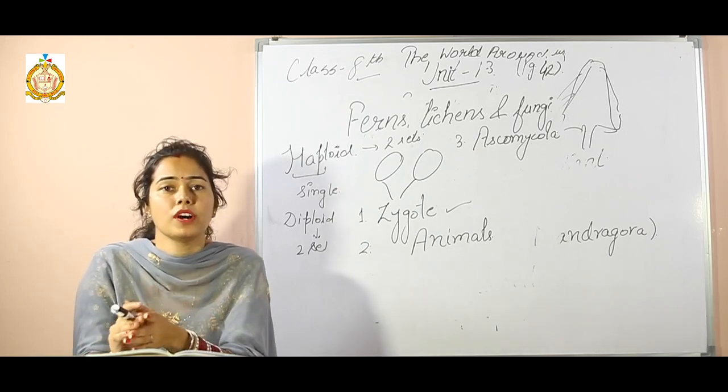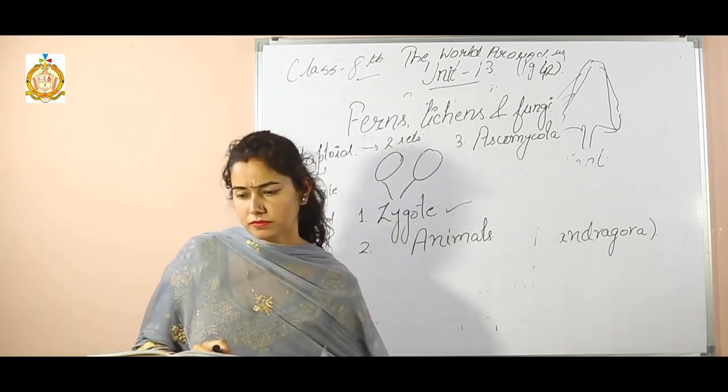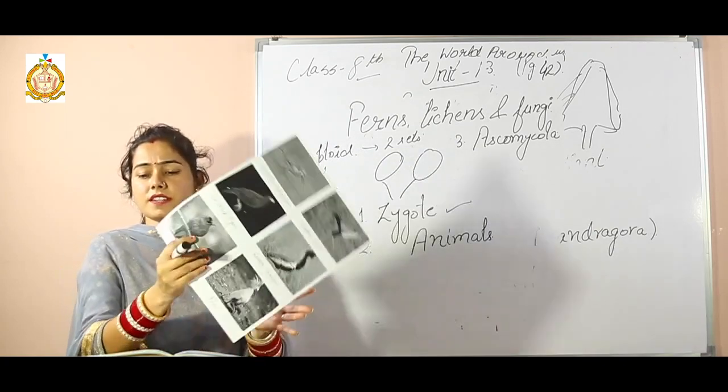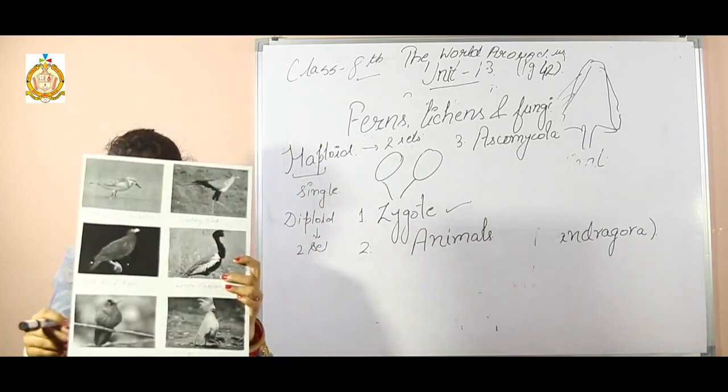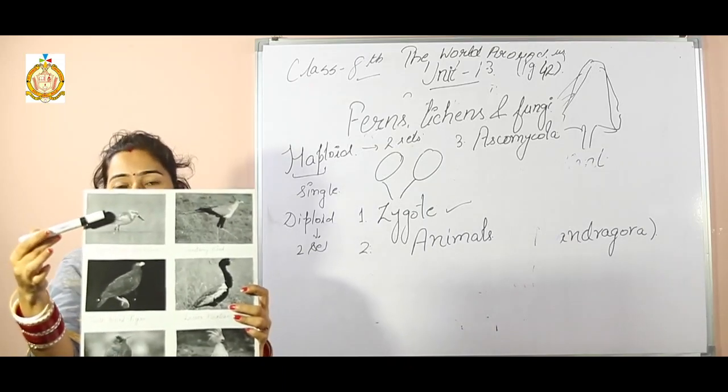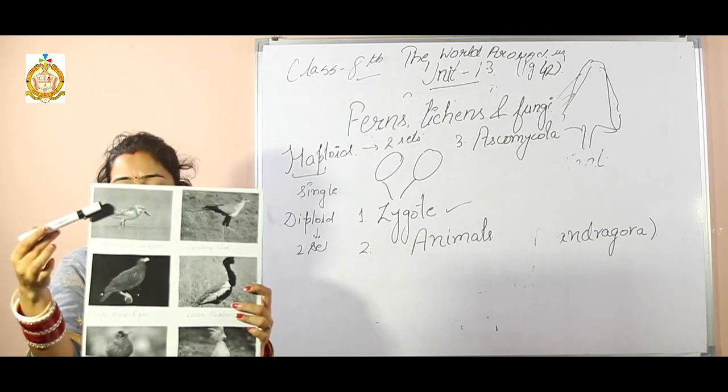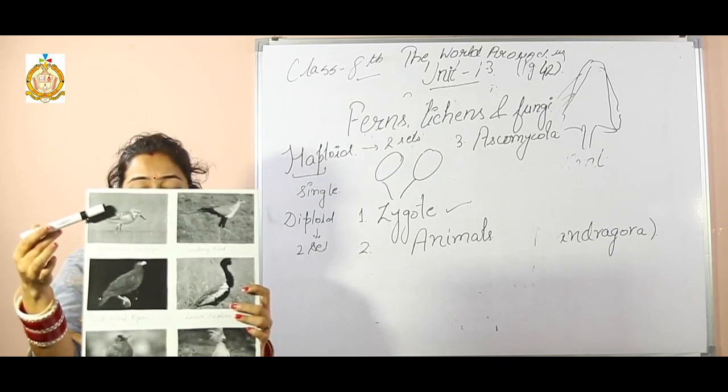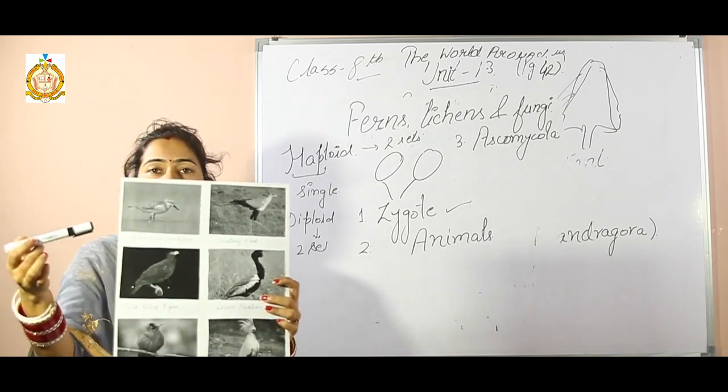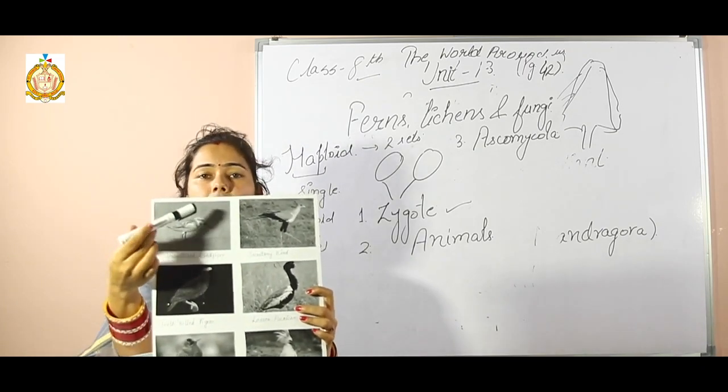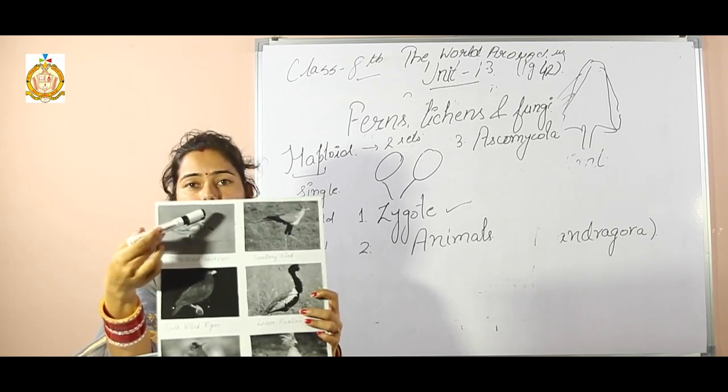The first bird you can see here is spoon-billed sandpiper. What is the special character of this bird? It has a small wading bird with a unique spatula-shaped bill. You can see here it has a spatula-shaped bill.